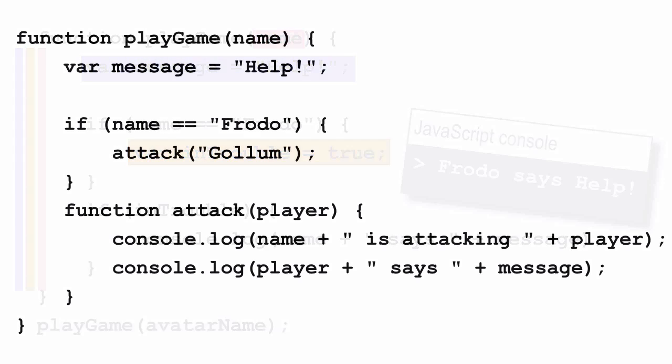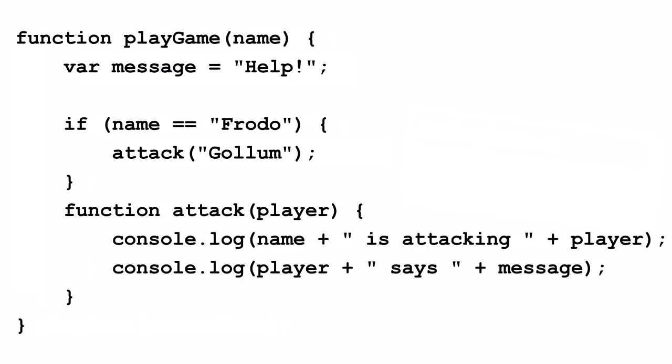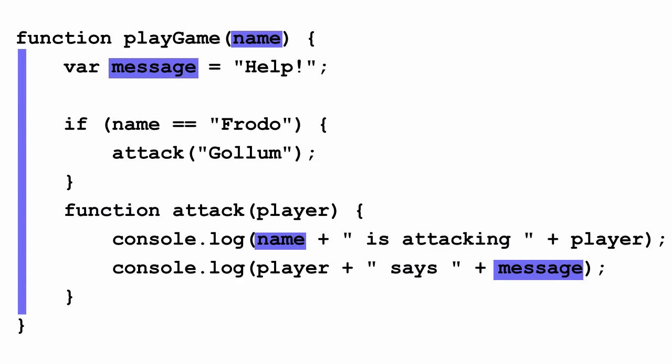Functions create local scope, and this applies to functions that are nested within other functions as well. In this example, we've got a function attack that's nested within the function play game. The variables name and message are defined in play game, so their scope is local to the play game function, which means they're visible in the entire play game function including within the nested function attack. The variable player, however, is defined in the attack function, so its scope is limited to just that function — player is not visible outside of attack.